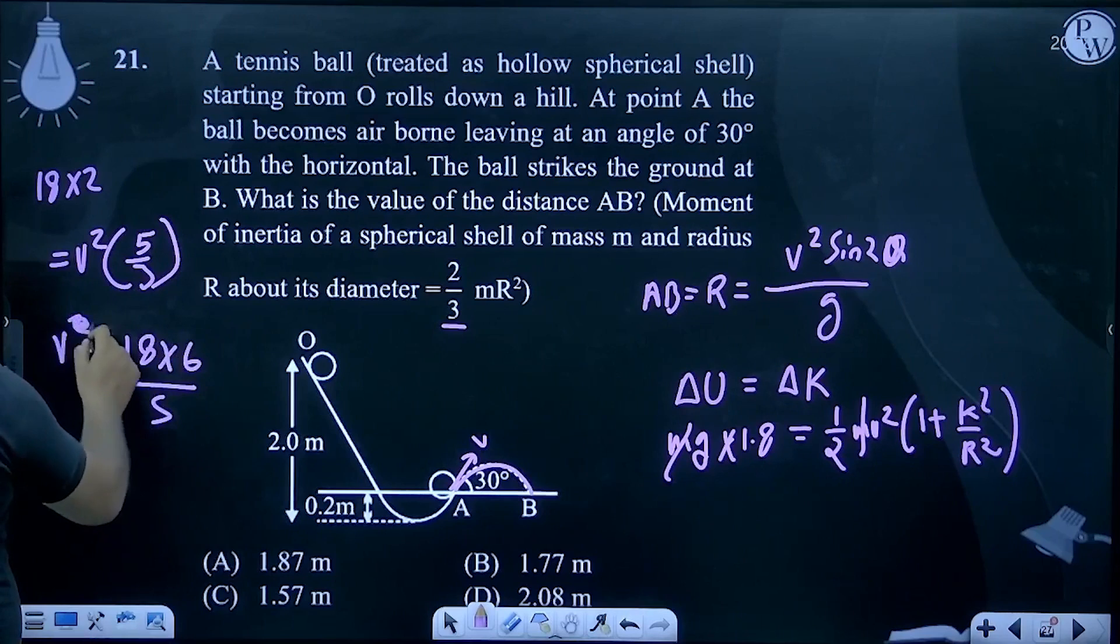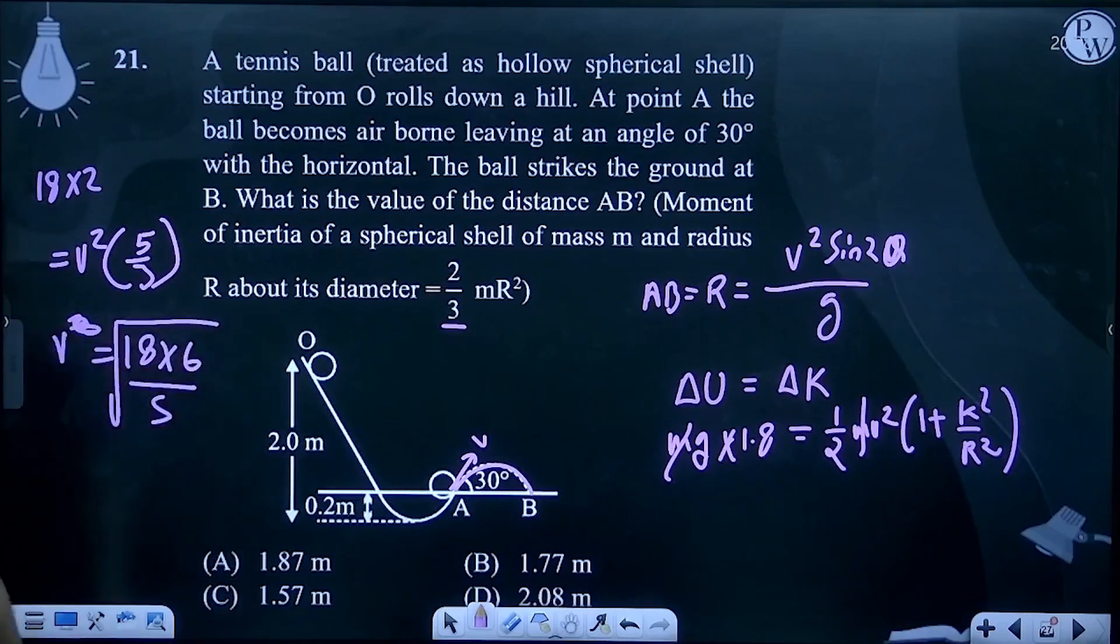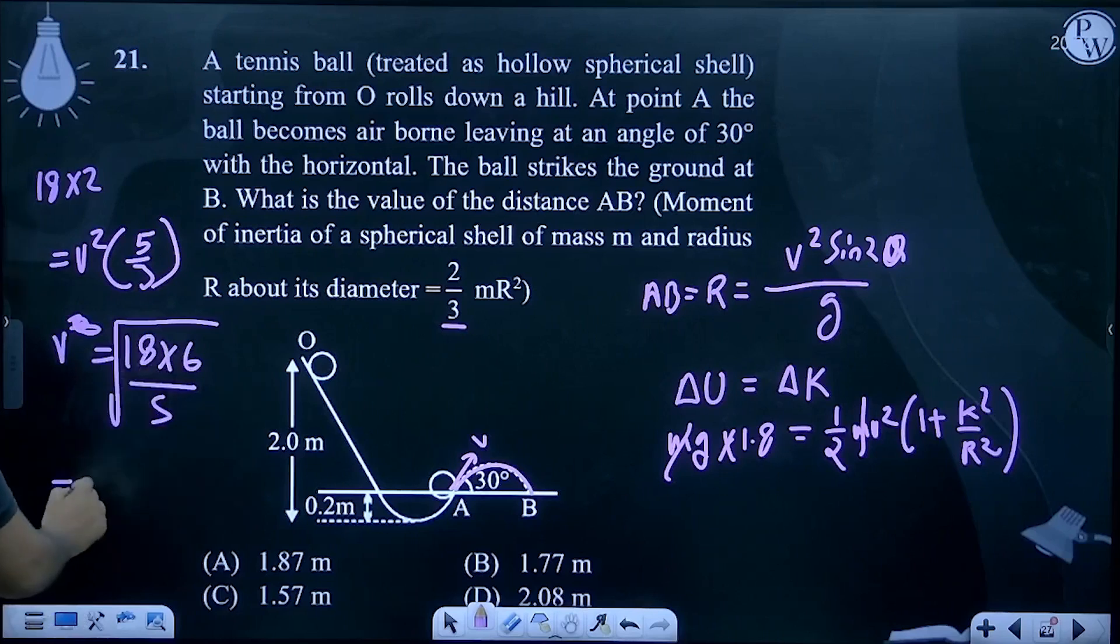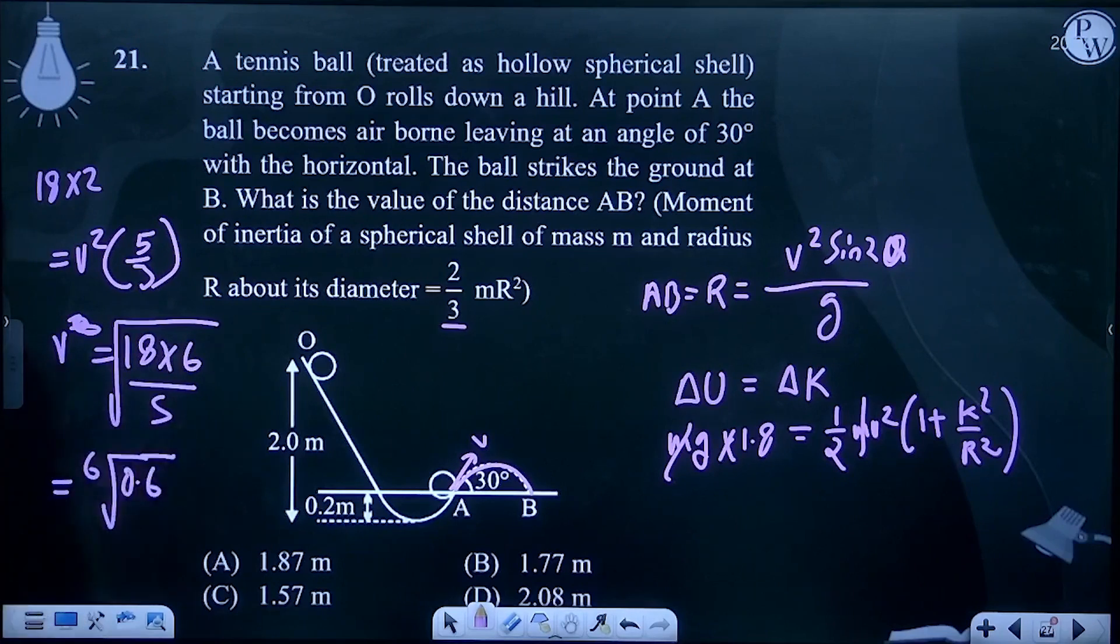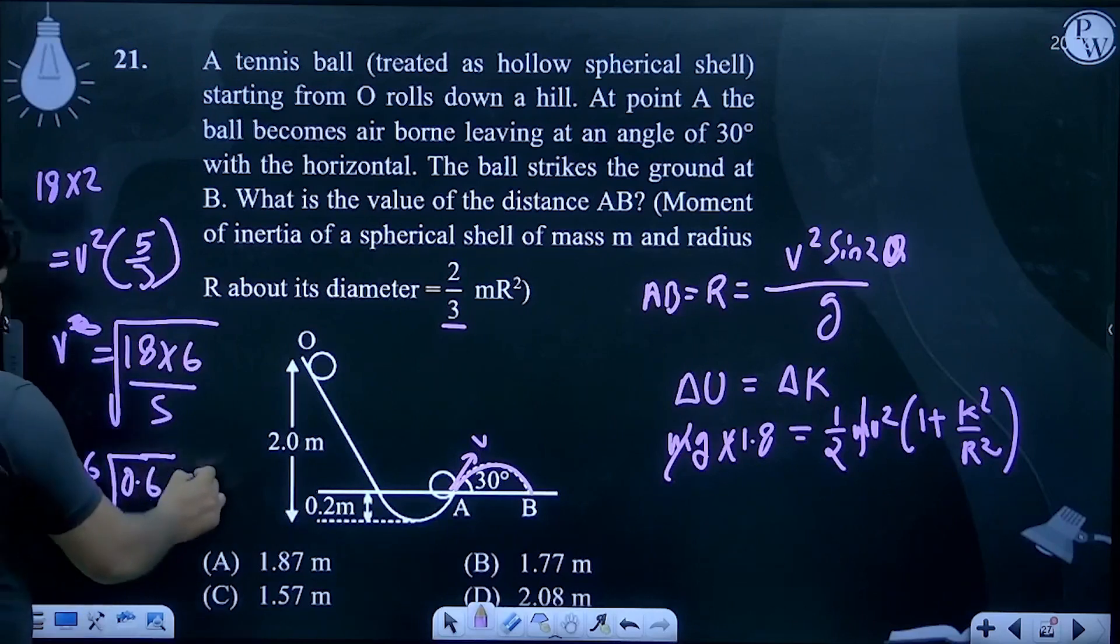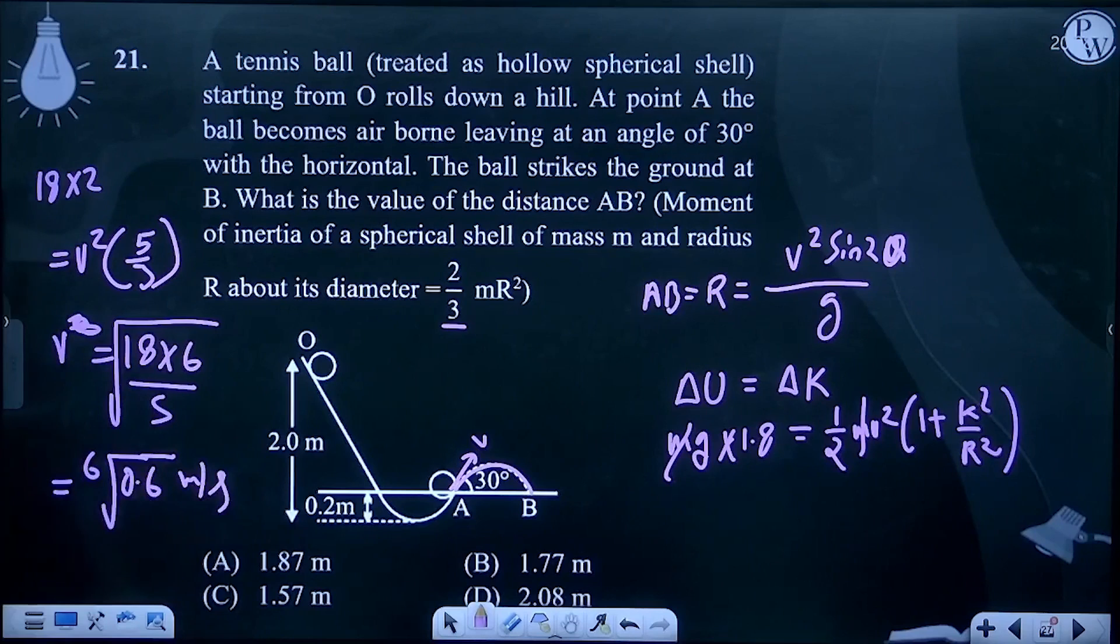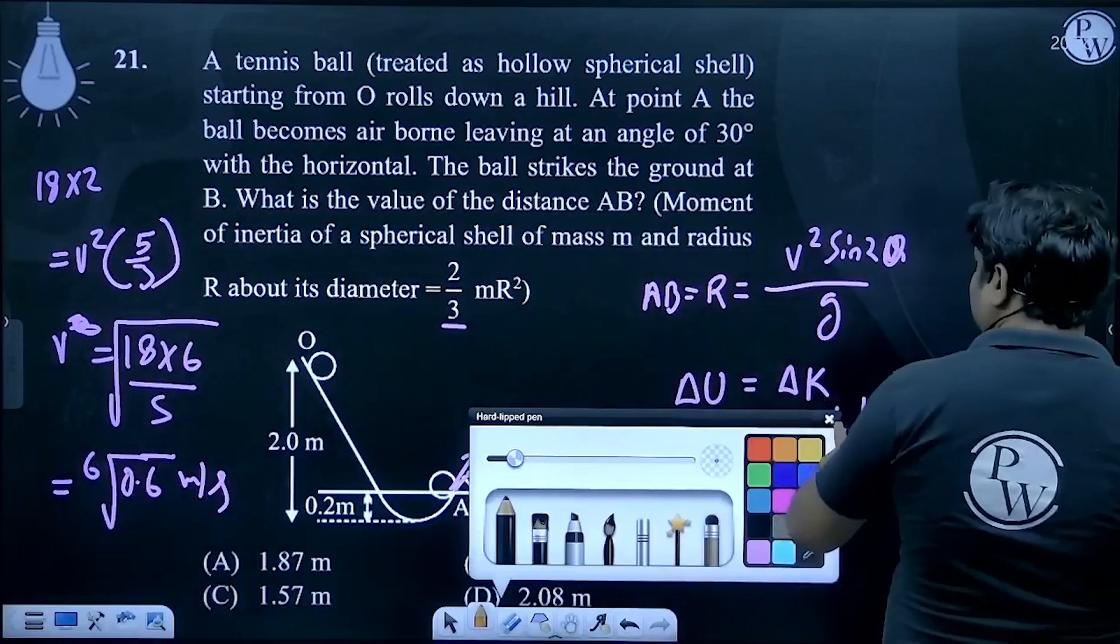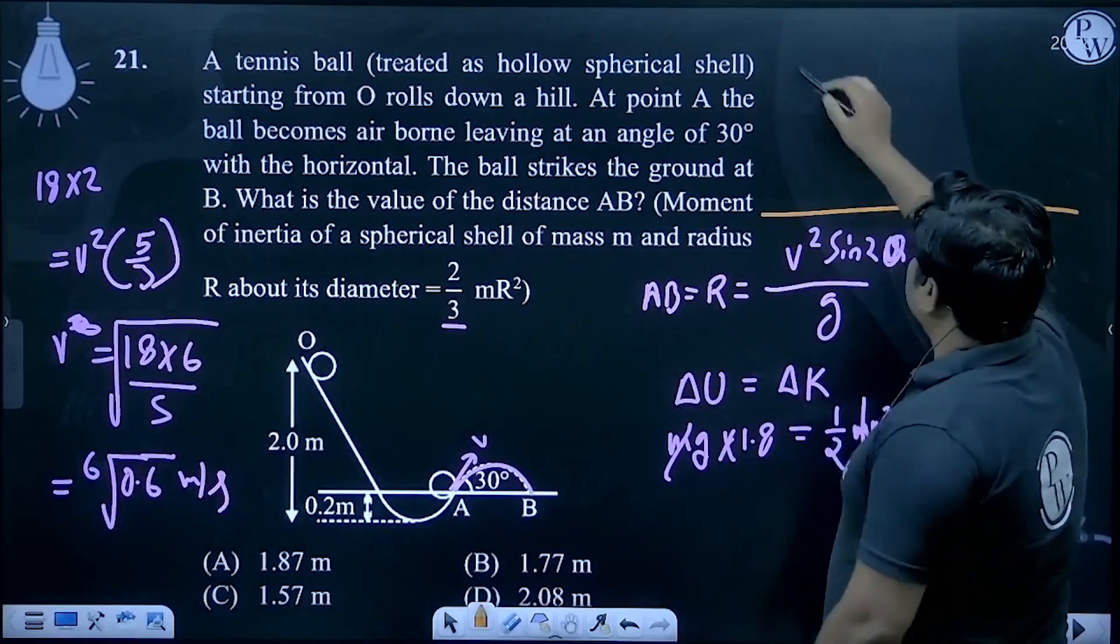Taking the square root: 18 × 6/5 = 18 × 0.6, which gives us v = 6√0.6 meters per second. Now we will solve the range formula.